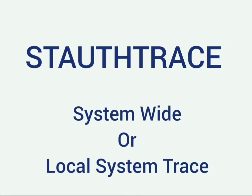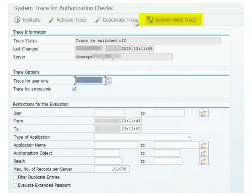Unlike ST01, ST/AUTH TRACE is a T-code where we can switch on the trace system-wide, meaning we can switch on the trace for all available application servers at a given time. You can also do it for a specific instance as well — both options are available. If you want to switch on a system-wide trace in ST/AUTH TRACE, you click on the option 'System Wide Trace.'